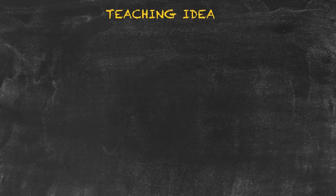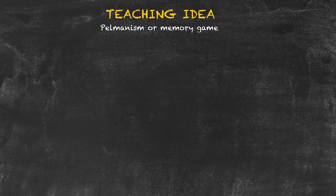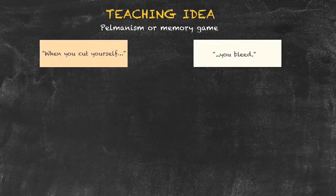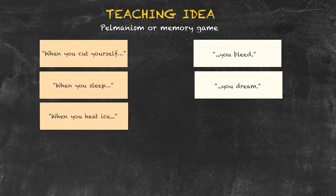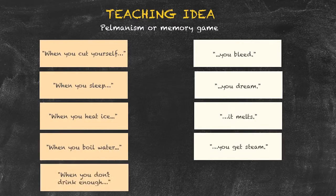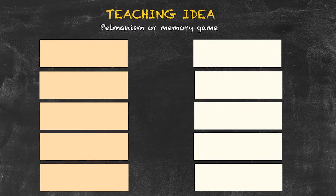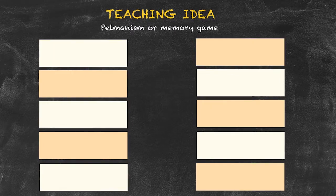Let's have a look at a card game commonly known as Pelmanism, and often known as the memory game. We have sentences cut into two. For example: when you cut yourself you bleed; when you sleep you dream; when you heat ice it melts; when you boil water you get steam; when you don't drink enough you get thirsty. The students first put the cards together correctly, then they are turned over, mixed up, and students work in pairs or threes taking turns trying to match the cards from memory.